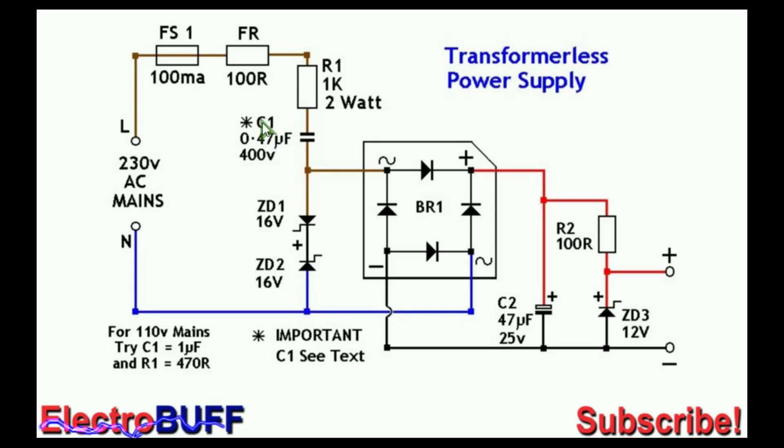Capacitors allow alternating current to flow through them but not direct current. There's a small fuse and a current limiting resistor FR as well as another resistor R1.